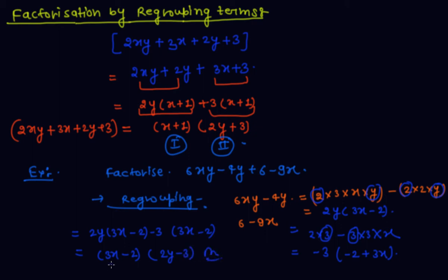So this is the answer — (3x minus 2) is the first factor and (2y minus 3) is the second factor. This is the method of factorization by regrouping terms. I hope you understand this method. Please download the Squirrel Learning app, and if you already have it, enjoy learning. Thanks for watching this video.